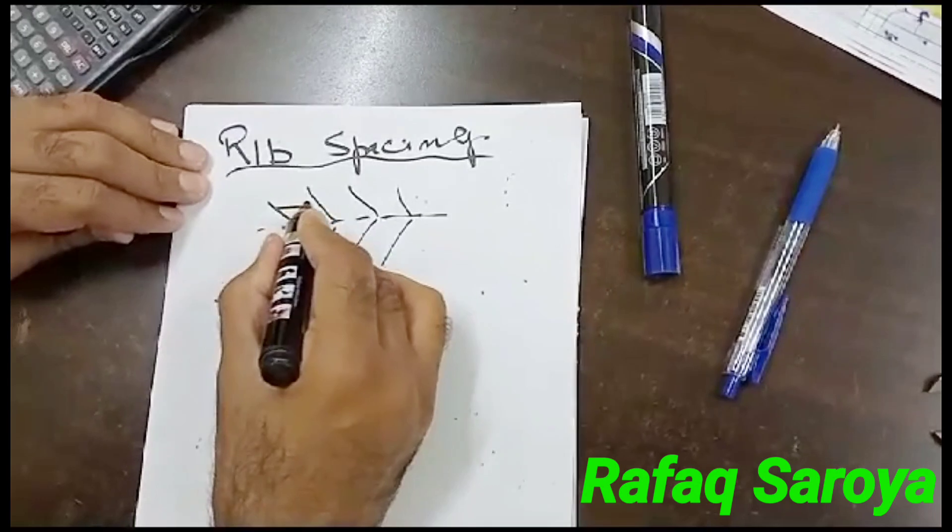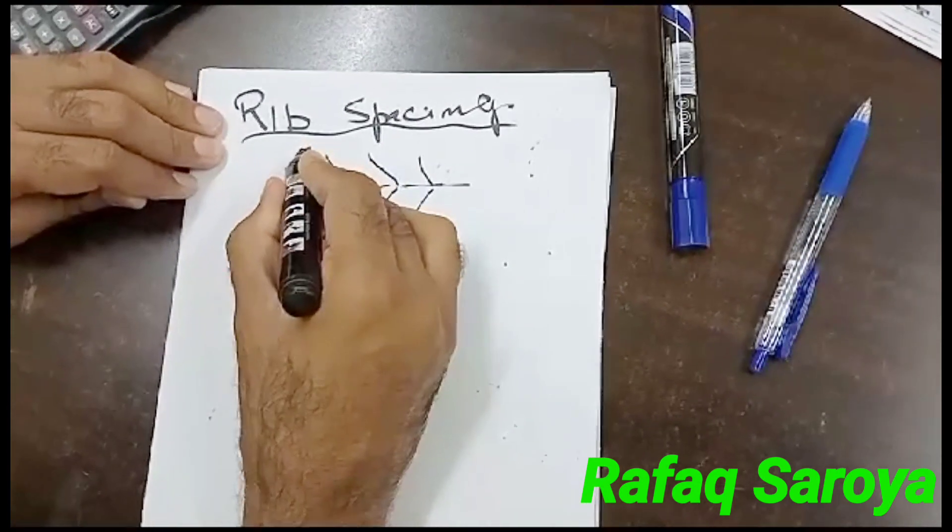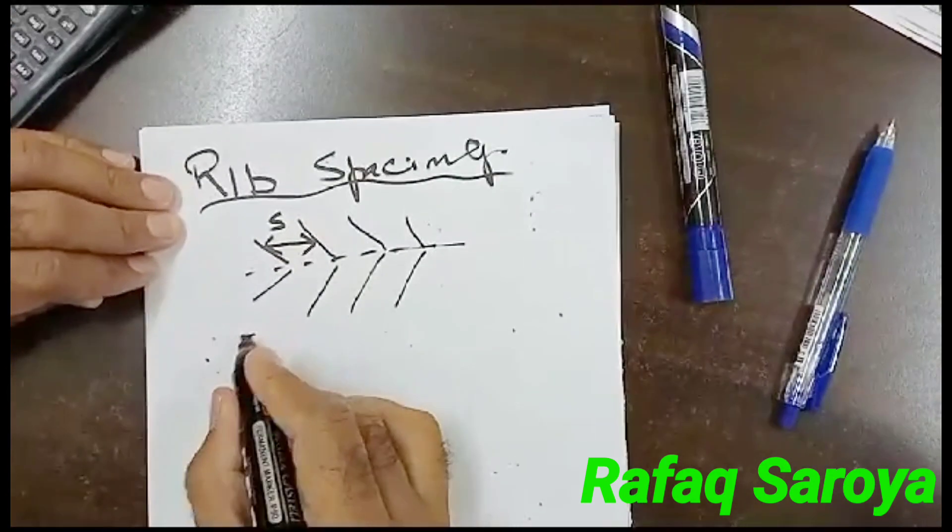You see, these two ribs are at a distance apart from each other. Let us suppose that this distance is represented by S. S means spacing.